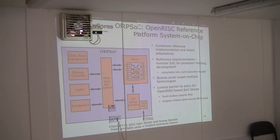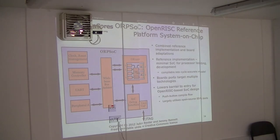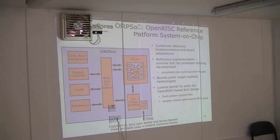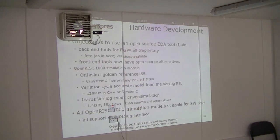The CPU by itself isn't much use — you need a system around it, memory, interfaces, and things like that. They developed a reference system on chip called ORPSoC — the Open RISC Reference Platform System on Chip — just as an example implementation. The idea is that it can go on any FPGA family, and anything specific to a technology is if-defed out so it's optionally there. Today's demo works on a derivative of this that I've developed for the CPU I've been working on for the last couple of years.